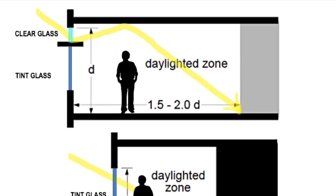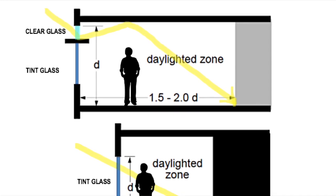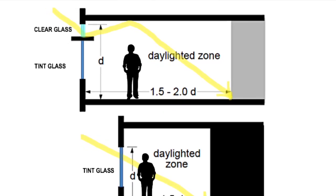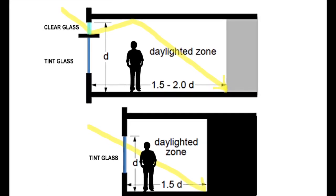Light shelves have been proven to reduce the need for artificial lighting in buildings. Since they can reflect light deeper into a space, the use of incandescent and fluorescent lighting can be reduced or completely eliminated depending on the space.